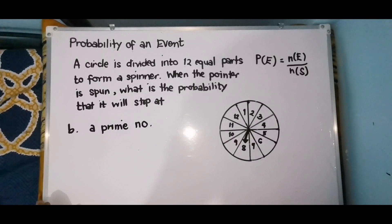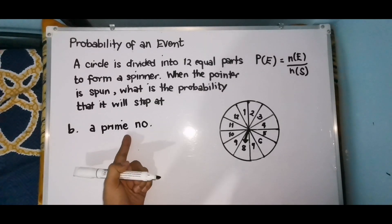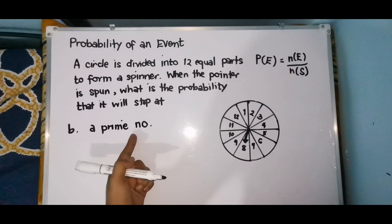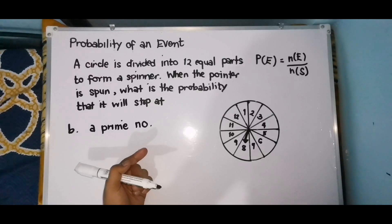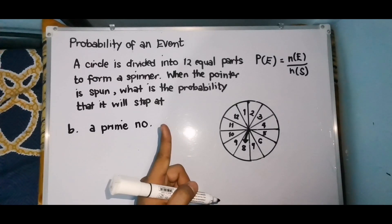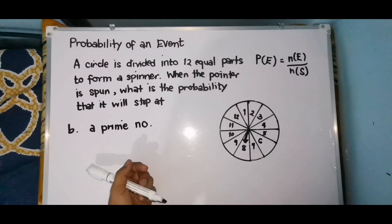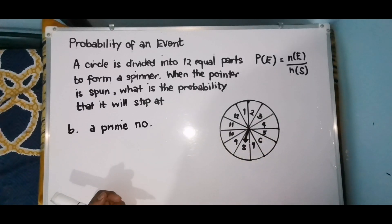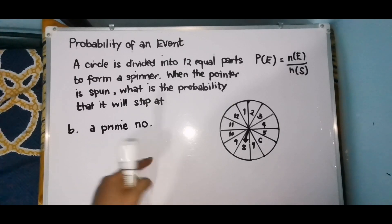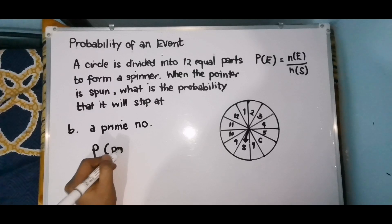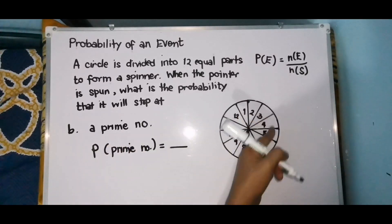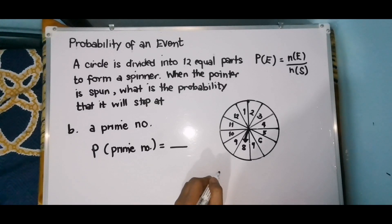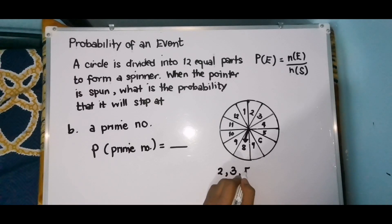Letter B: what is the probability that it will stop at a prime number? When we say prime number, the factors are 1 and itself. Hindi kasama yung 1 because 1 is a special prime number — ang factor ni 1 ay isa lang, which is 1. Kailangan pag prime number, ang factor ay dalawa: 1 and itself. So ano kaya sa mga numbers from 1 to 12 na ang factors lang ay 1 and itself? So let us identify. The prime numbers from 1 to 12 are: 2, 3, 5, 7, and 11.